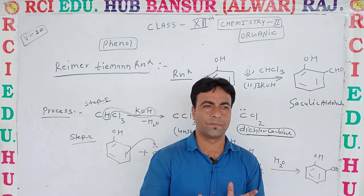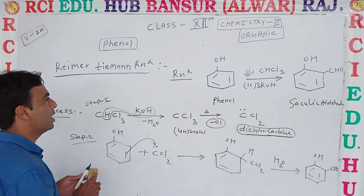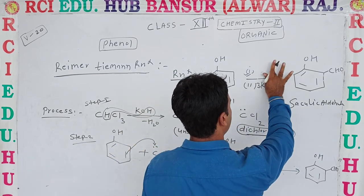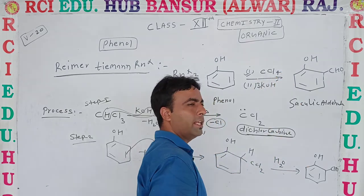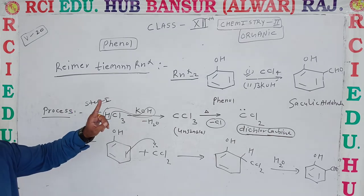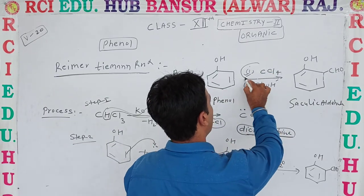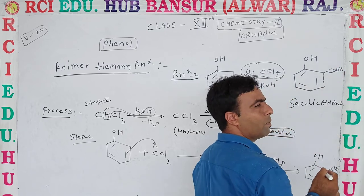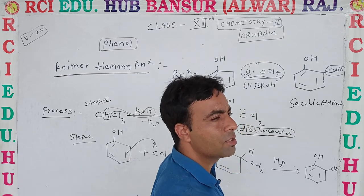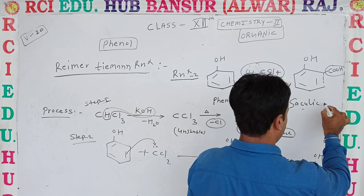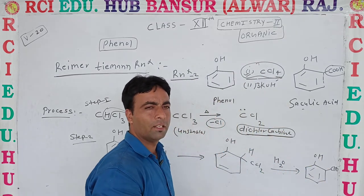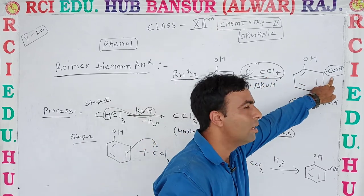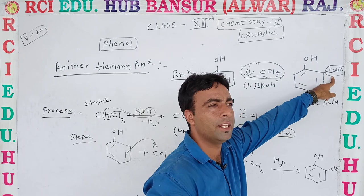This reaction is called the Reimer-Tiemann reaction. Now for reaction number 2 — there is a slight change: if we use CCl4 (carbon tetrachloride) instead of CHCl3, then the product changes. In this case, a carboxylic functional group is formed instead of the aldehyde group. That product is called salicylic acid. So if CHCl3 is used, aldehyde is formed; if CCl4 is used, a carboxylic derivative is formed — that is the only difference.